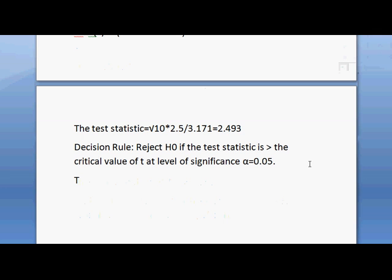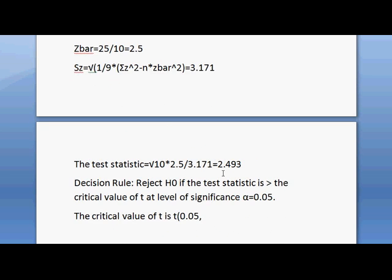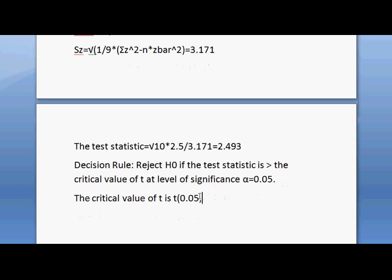Let's find the critical value of t. The critical value of t is t(α=0.05) with degrees of freedom n-1, that is 10-1=9. From the table we get this value as 1.833.